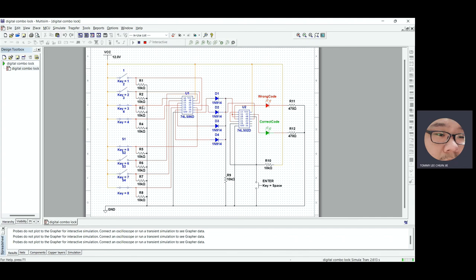And if the user enters 1, 0, 0, 1, so right now, the user press enter. Here, the green LED will light up. So it shows that the code is correct and the lock will be unlocked.